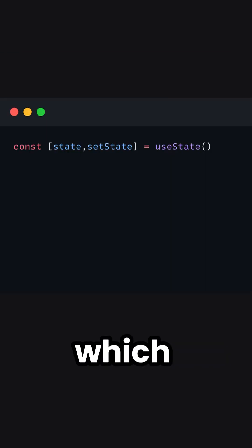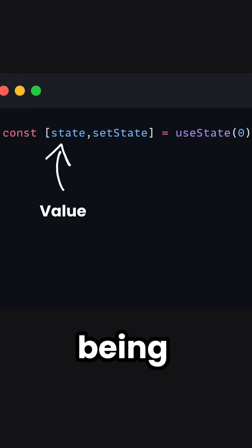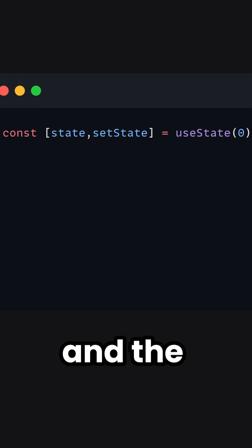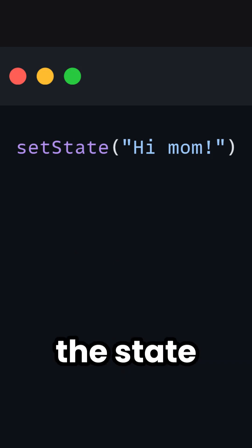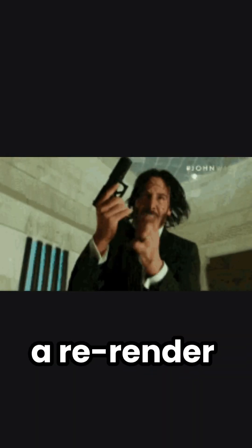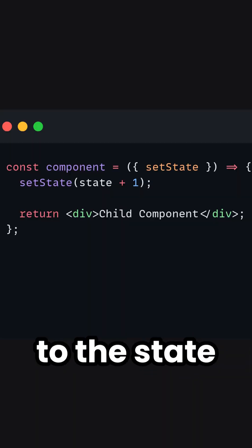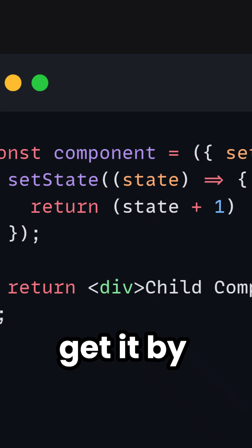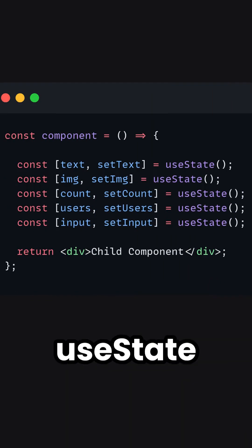The first one being the useState hook, which returns an array of 2 elements. The first one is the value being tracked, and the second one is a mutation function that allows you to change the value of the state and trigger a re-render of the page. If you don't have access to this state, you can get it by passing a function as a prop. But the code can become ugly if you add too many useState hooks in your code.